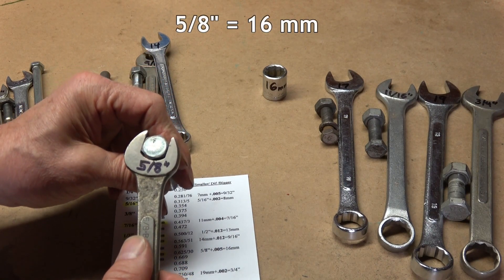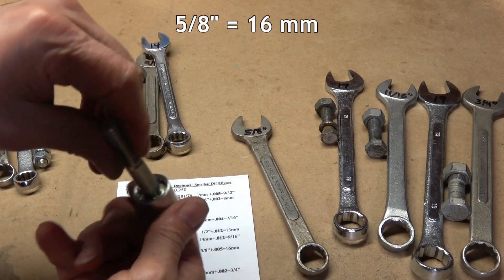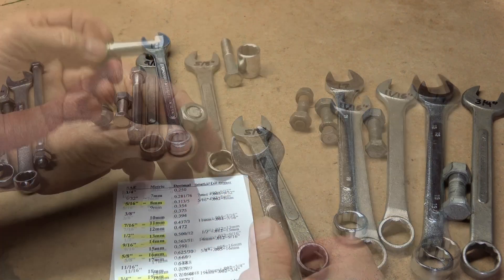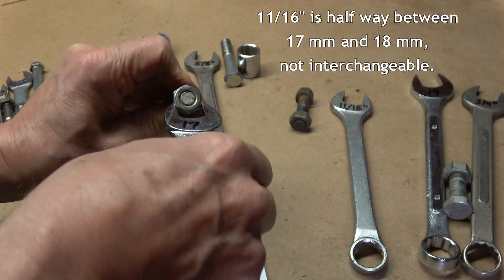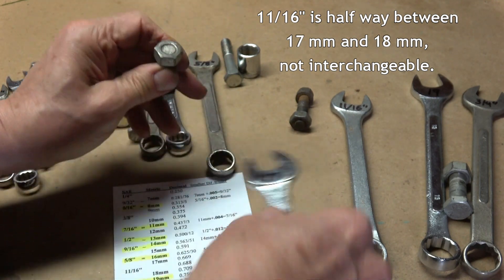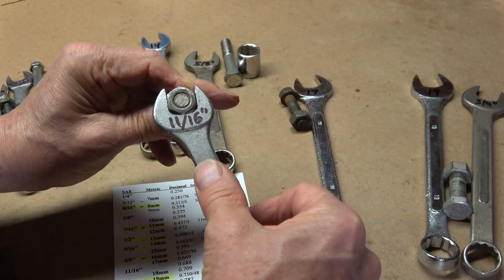And 5 eighths is almost identical to a 16 millimeter. A 17 millimeter will not go on this nut, but an 11 sixteenths inch fits it just fine, so we can see that they are not interchangeable.